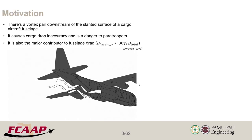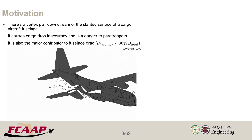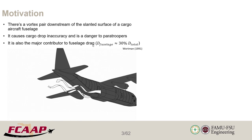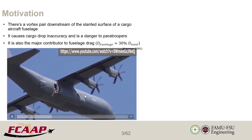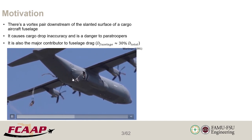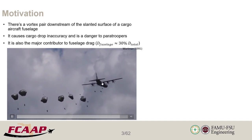Let's get to the motivation for this work. We're looking at an industrial problem which is the vortex pair that appears downstream of the slanted surface of a cargo aircraft. This representation here is a C-130 aircraft and we know that there is a pair of counter-rotating vortices behind it, and this is usually an issue with cargo drops. We get inaccuracy in the cargo drop and it's also dangerous for paratroopers. Here is a video of parachute troopers jumping off the aircraft — you can see the canopy of the parachutes actually interacts with the flow field behind the aircraft.